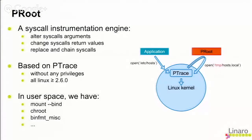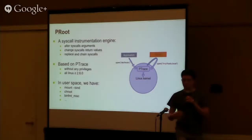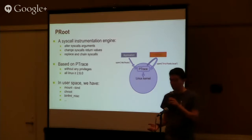So I guess you know how ptrace works. If you have an application which is ptraced by P-Roots, once a syscall is done, it goes into the kernel — the ptrace part of the kernel. Instead of being executed directly by the kernel, the kernel asks the ptrace server — P-Roots — what to do with this syscall. If you want to change something, do it; when done, go back to the kernel. For instance, I can change the arguments: instead of /etc/hosts, I will open /tmp/hosts.local. Then it goes inside the kernel and executes. It returns to the ptrace, which can change back some arguments or change the return value. Then it goes to the application. You can transparently change things so the application thinks it's doing something, but in fact it's doing something else.